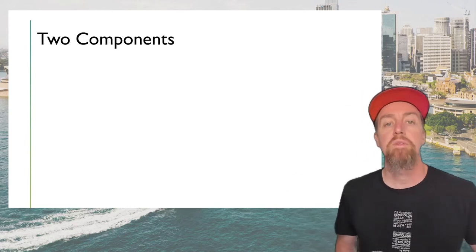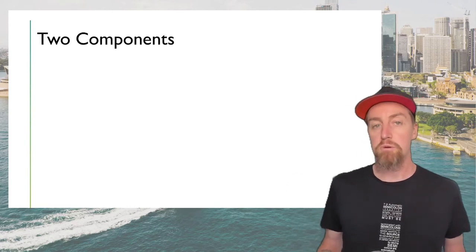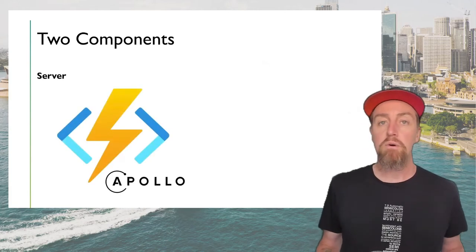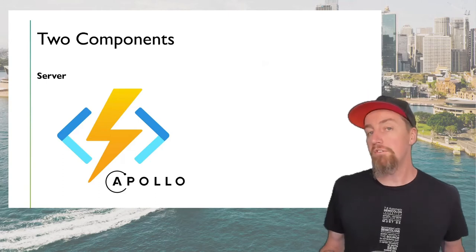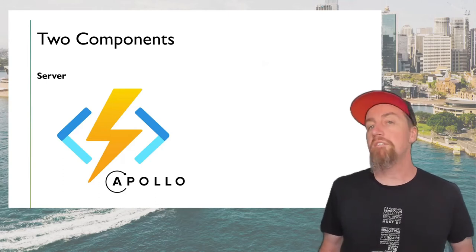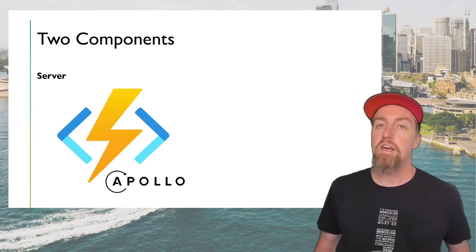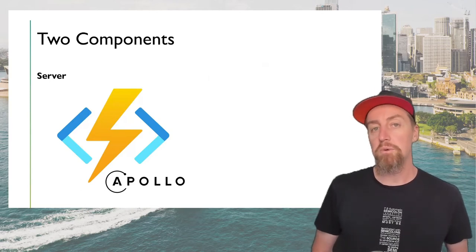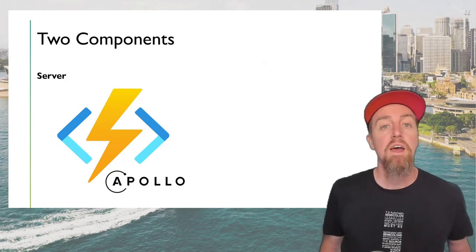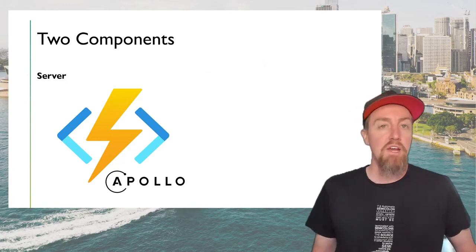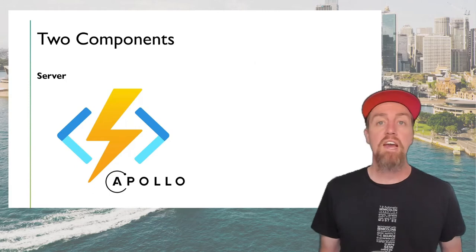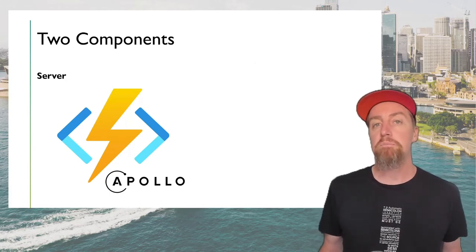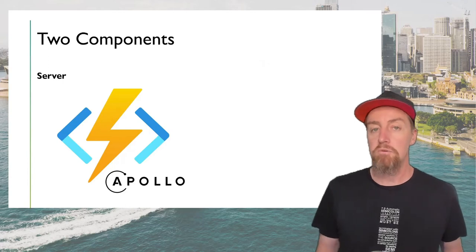What are we going to be building today? We're building an application with two components. We'll start with a server using the Apollo GraphQL framework — a server implementation you can run on Express, Koa, or in a serverless model. I'm going to use Azure Functions for the serverless model. The approach is the same whether you're using a servered or serverless model.